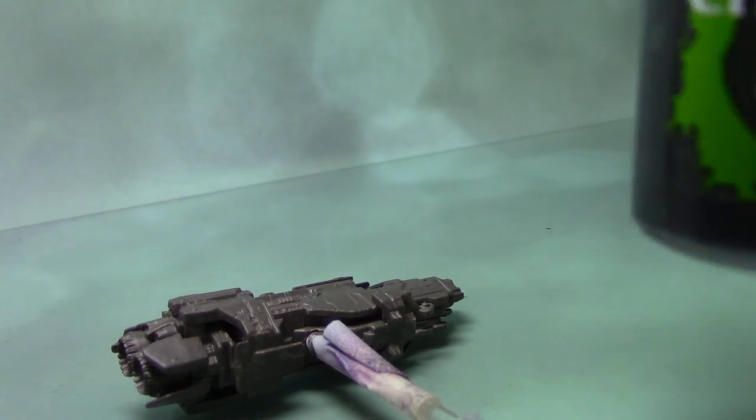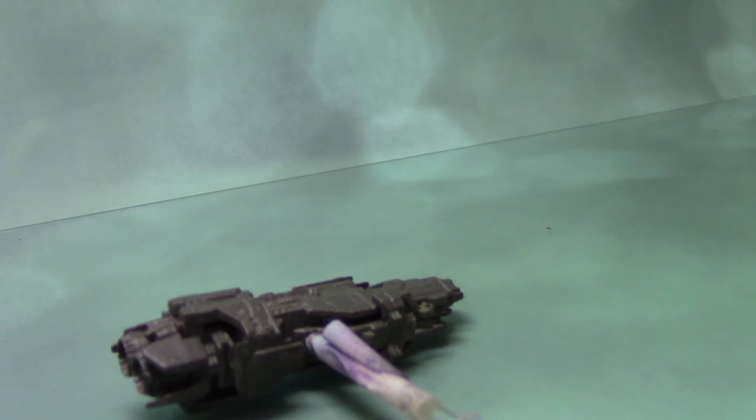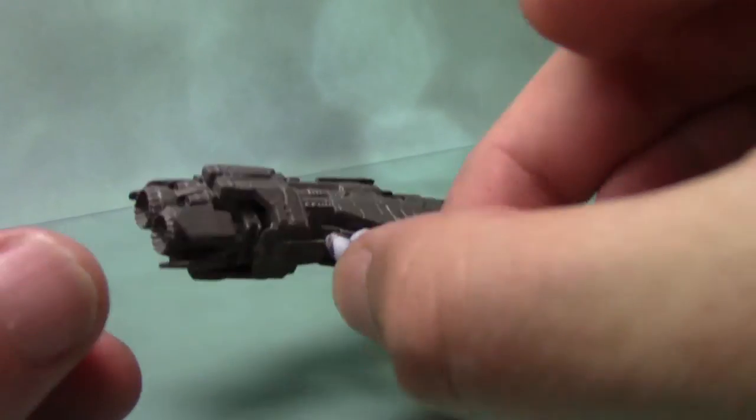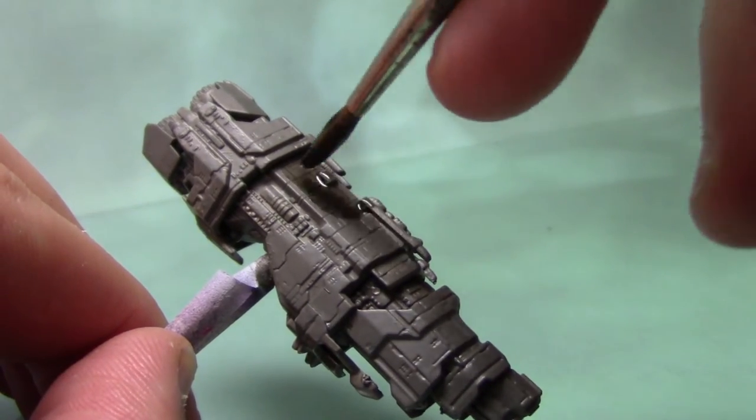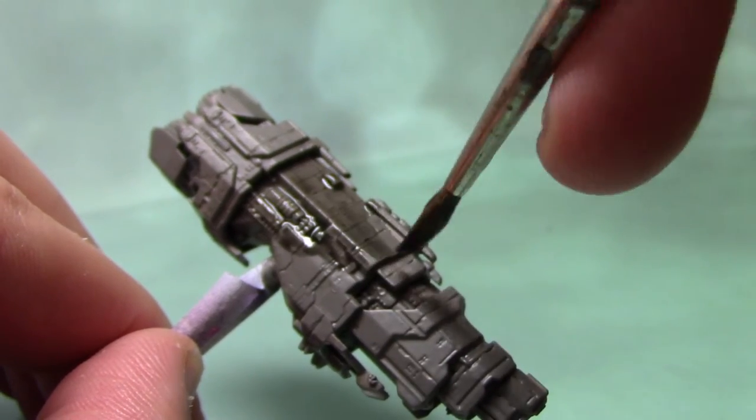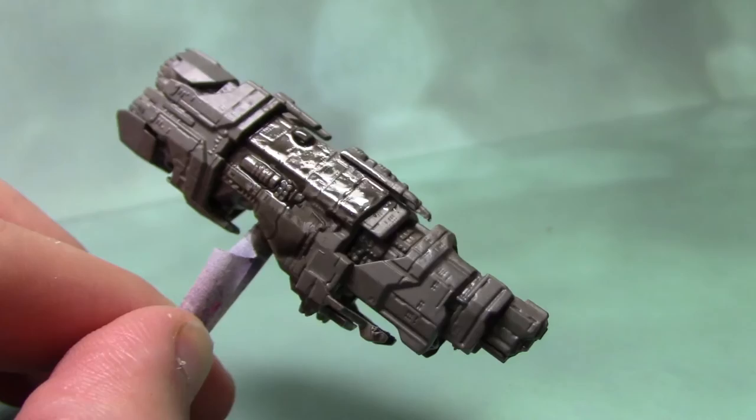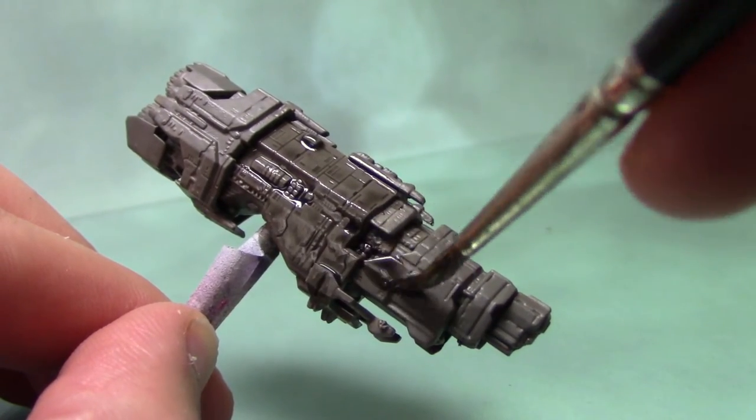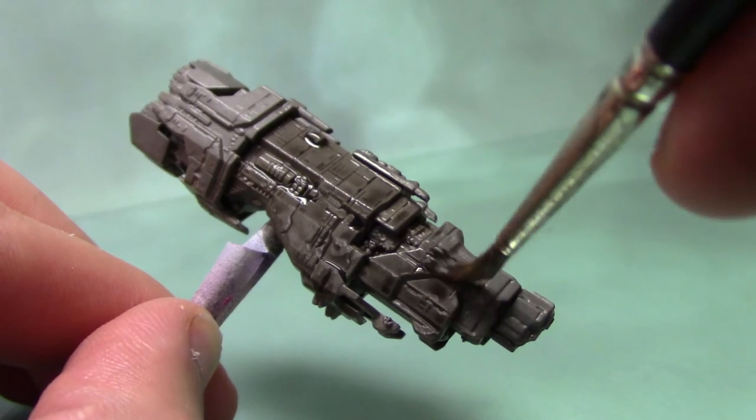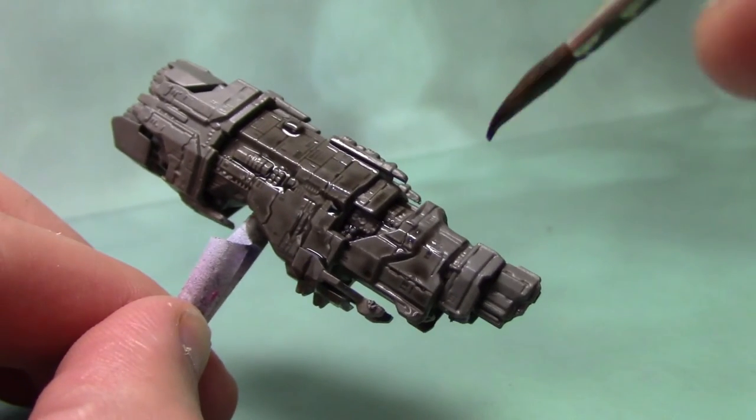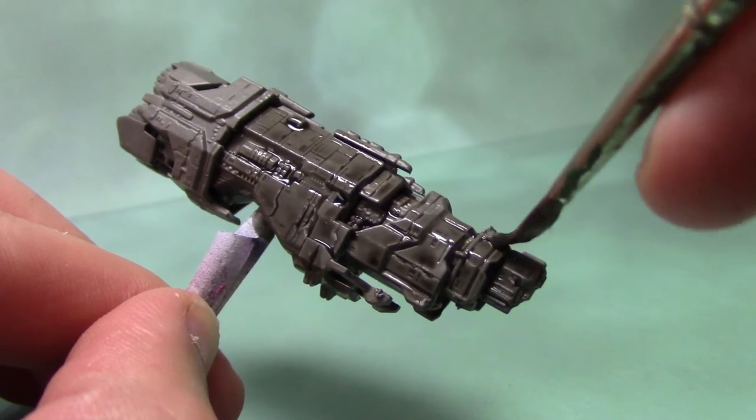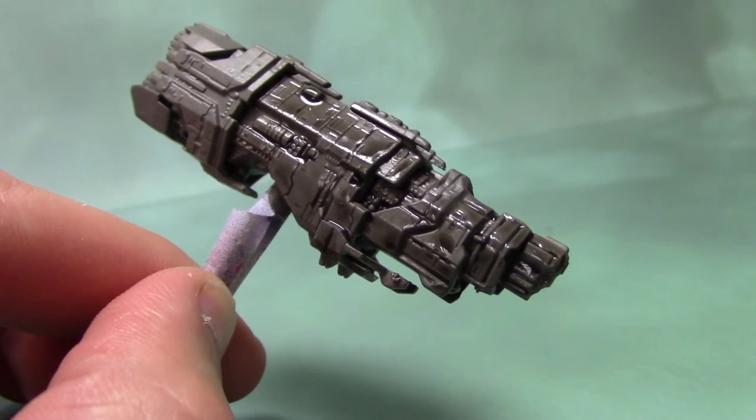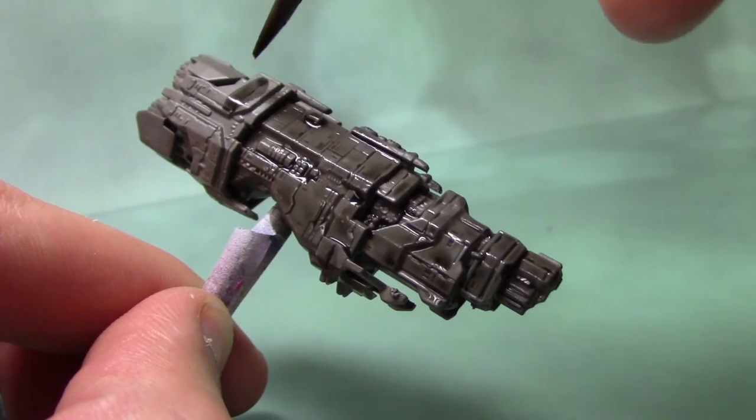You'll lose that shine as we apply a wash of Nuln Oil. I'm going to apply this all over the ship, but not too thickly. It's still fairly thick, but I'm going to spread it around to get nice even coverage. You don't want it to pool, so keep spreading it around the ship. It will darken the overall ship, but we'll be lightening it back up in the next few steps. Go all over the whole ship with this Nuln Oil.